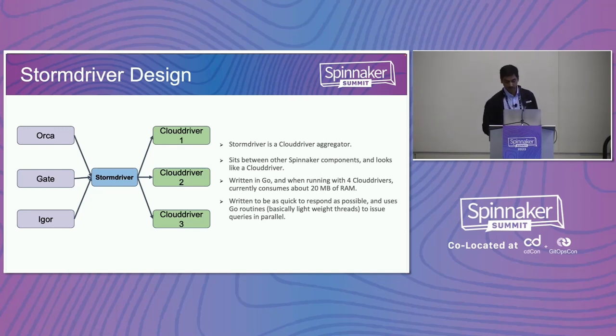Stormdriver is written in Go. We wanted to keep the footprint really small and achieve efficiency, so we wrote it in Go. It connects to Cloud Drivers as a scatter-gather. When Orca wants to deploy, it knows which Cloud Driver instance to route to. And if someone asks what Cloud Driver accounts exist, it can return accounts from all instances together. That's a fairly simple design and it works really well, though by itself it doesn't support remote deployments.